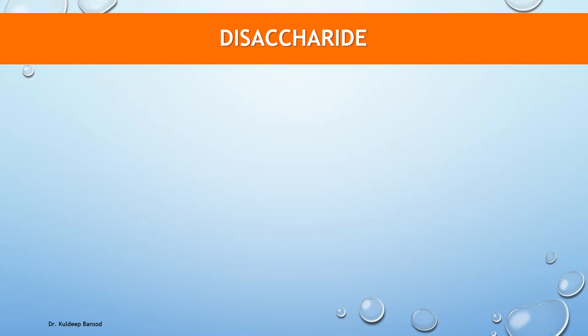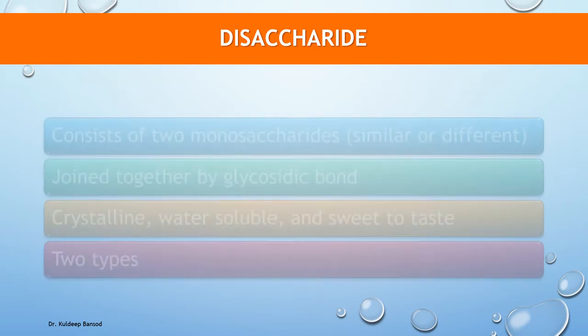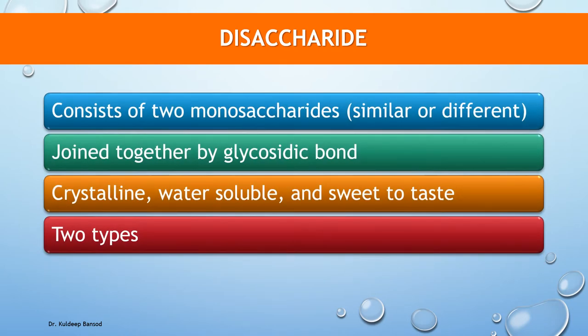Oligosaccharides are saccharides which on hydrolysis yield 2 to 10 molecules of monosaccharides. Out of the oligosaccharides, disaccharides are most common. As evident from the name, a disaccharide consists of two monosaccharide units, which may be similar or dissimilar. They are held together by a glycosidic bond. Disaccharides are crystalline, water-soluble, and sweet in taste.